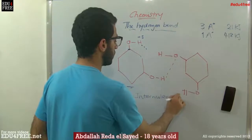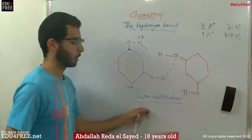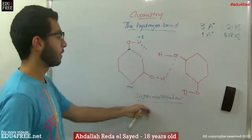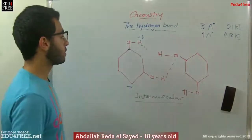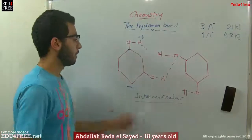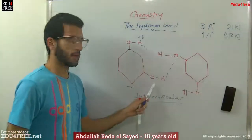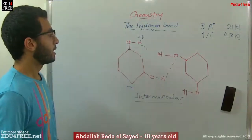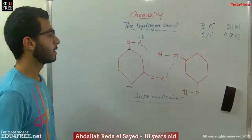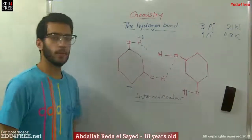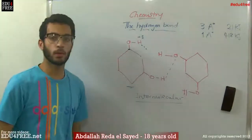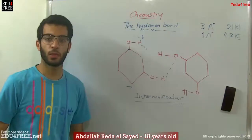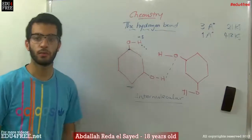This type is called an intermolecular hydrogen bond, and the other one was an intramolecular hydrogen bond. We will talk about that in organic chemistry later. Next time, we will talk about the metallic bond. Thank you for watching and see you.